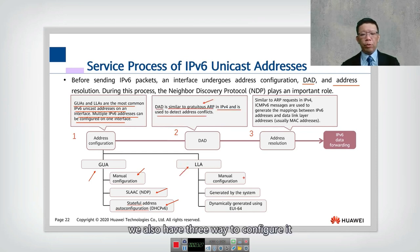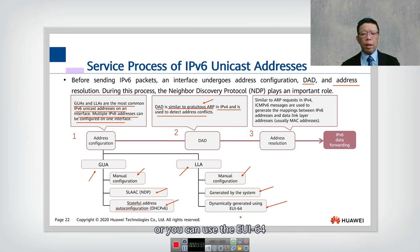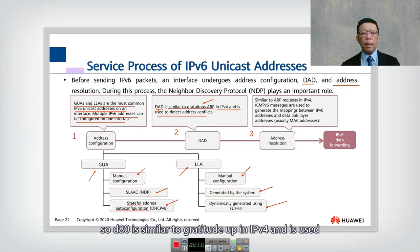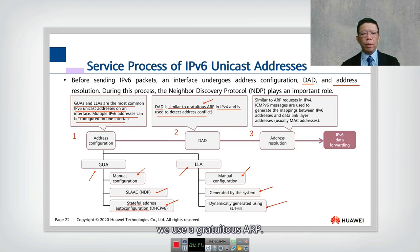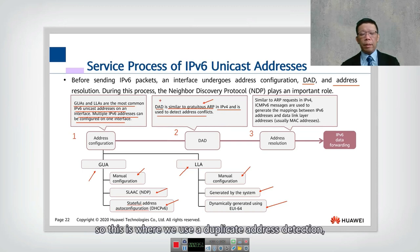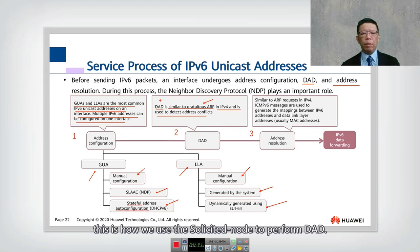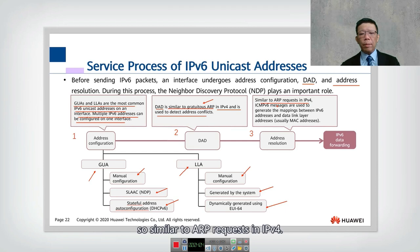For link-local addresses there are also three ways to configure them: manual configuration, auto-generated by the system, or using EUI-64. On the second step we have Duplicate Address Detection (DAD), which is similar to gratuitous ARP in IPv4 and is used to detect address conflicts. In IPv4 we use gratuitous ARP, but in IPv6 there is no ARP, so we use DAD. DAD uses the solicited-node address to perform the detection.